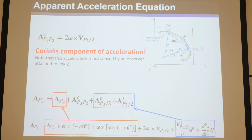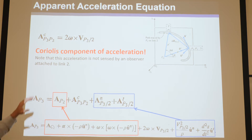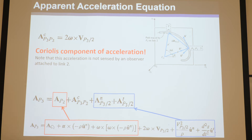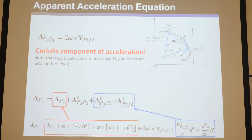Note that this acceleration is not sensed by an observer attached to link two. So if you're an ant attached to link two, you don't know anything about omega, so you're not going to sense it, you're not going to feel it, but it will definitely be there.